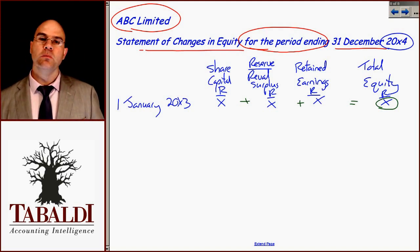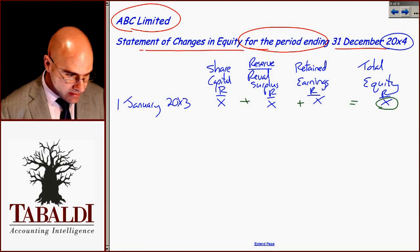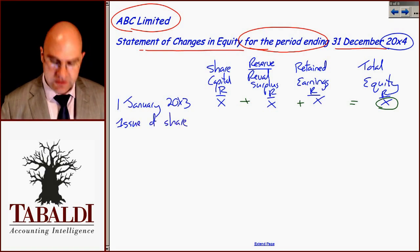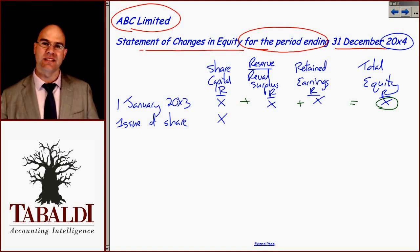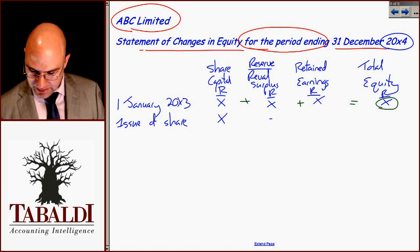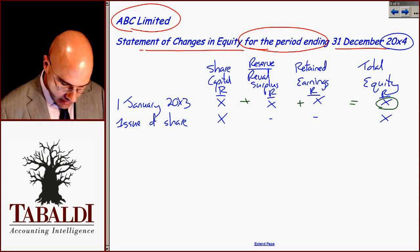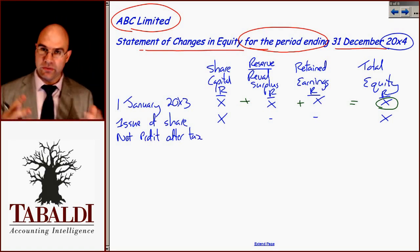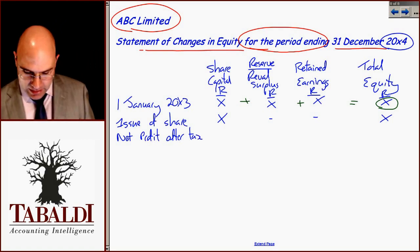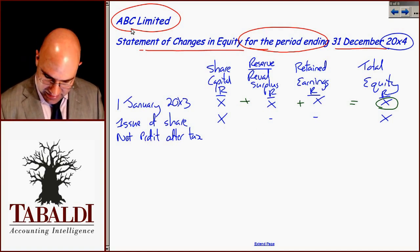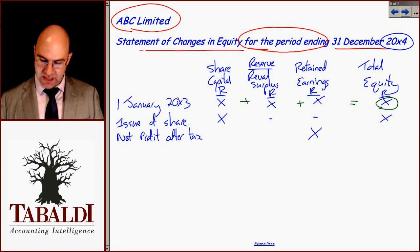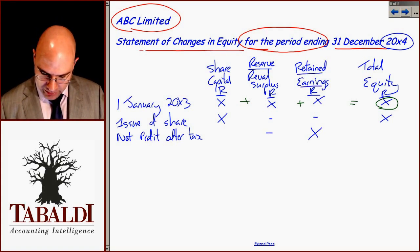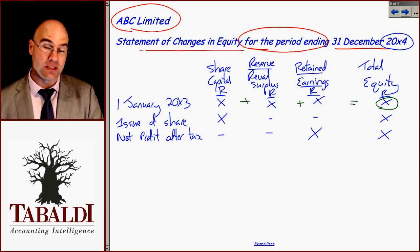Then we must put in the movements for that year. Let's pretend there were shares issued — an issue of shares — that obviously would only increase share capital; you'll deal with that later in the study unit on companies. That will not have affected any of the others, but you'll have a total. Then there will be net profit for the year after tax. You'll remember that profit goes to the profit and loss account, gets closed out and accumulated in retained earnings. Nothing under revaluation surplus, nothing under share capital, but total equity and retained earnings are adding to.